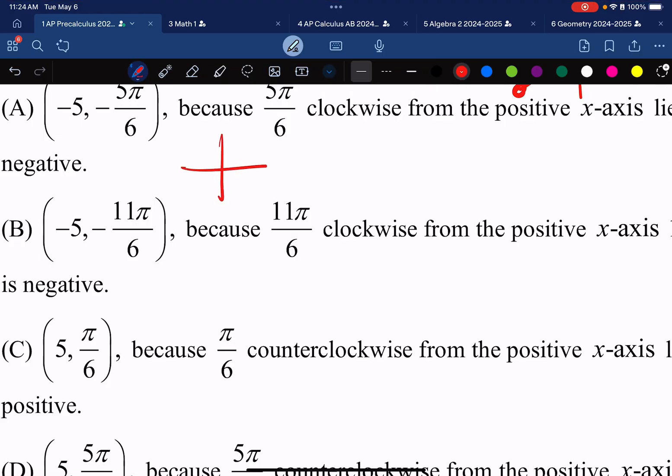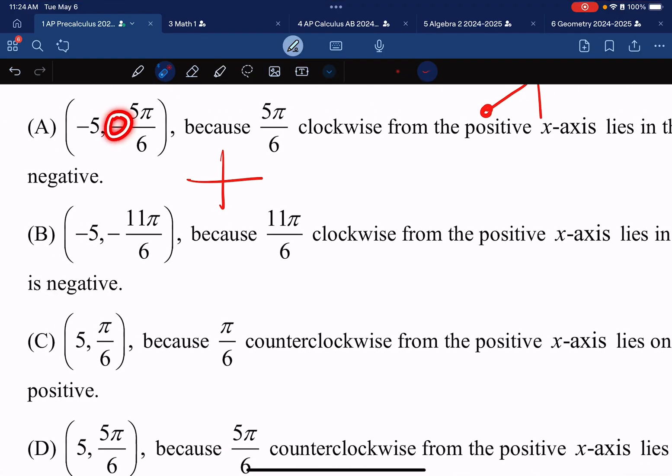So in part A, I'm first going to go to negative 5π over 6. Negative implies that we're going clockwise instead of counterclockwise like we normally would for a positive radian location. So negative 5π over 6 is going to come all the way to this spot.